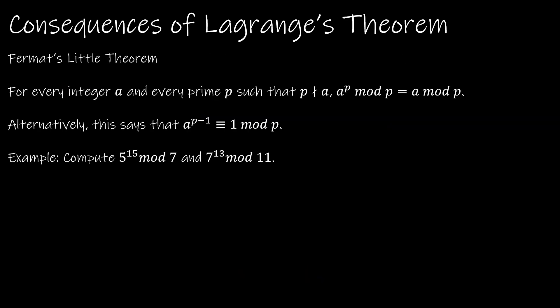Another consequence of Lagrange's Theorem is Fermat's Little Theorem: for every integer a and prime p such that p does not divide a, a to the p is congruent to a mod p — or equivalently, a to the p minus 1 is congruent to 1 mod p. Let's see how this helps compute 5 to the 15th mod 7. Fermat's Little Theorem tells us that 5 to the 6th is congruent to 1 mod 7.